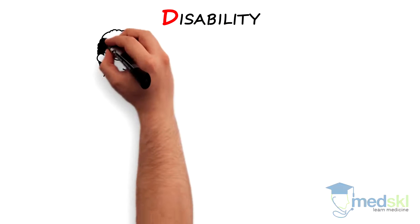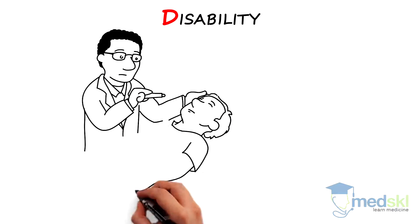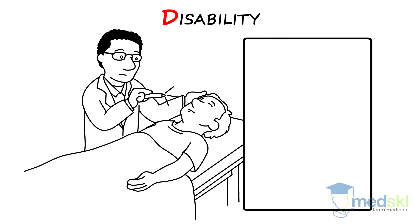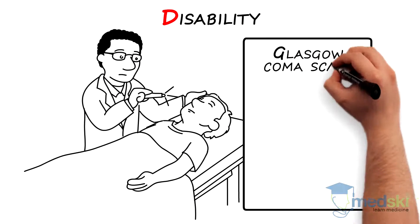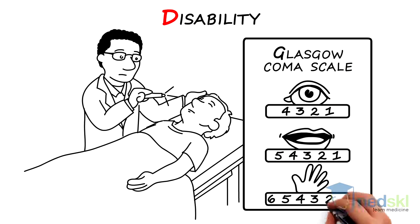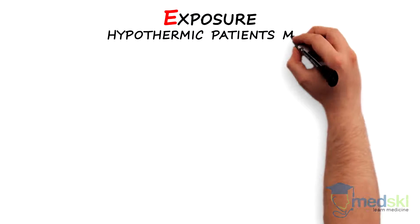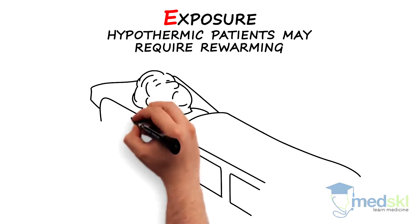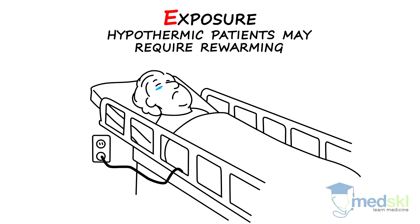Disability: assess the patient's neurologic status using the Glasgow Coma Scale, as this is a prognostic value. Exposure: hypothermic patients may require re-warming to improve chances of successful resuscitation.